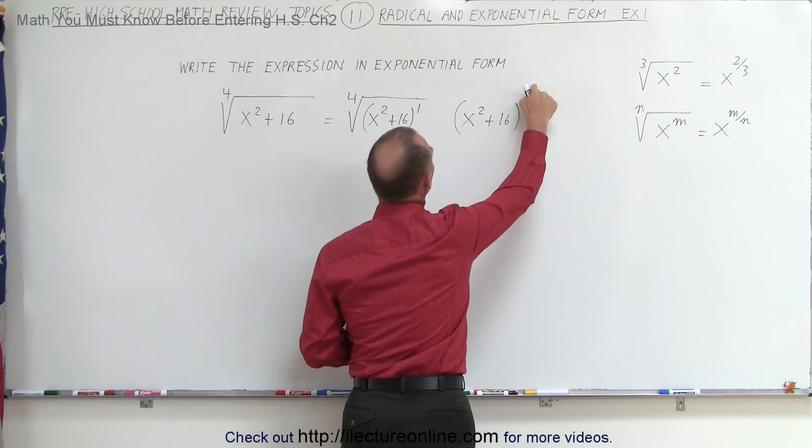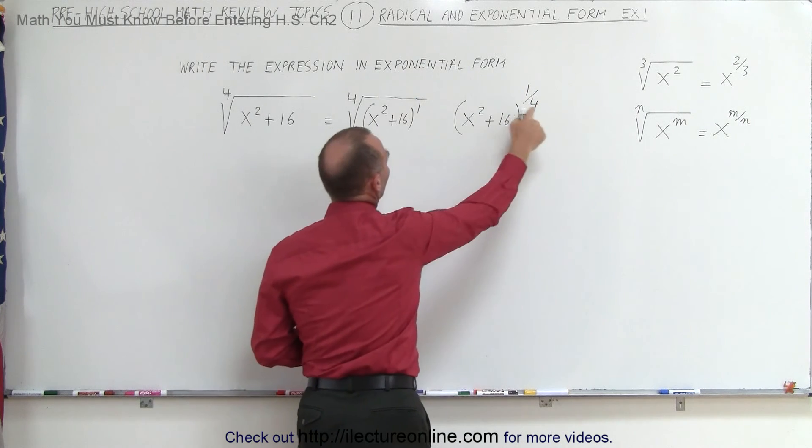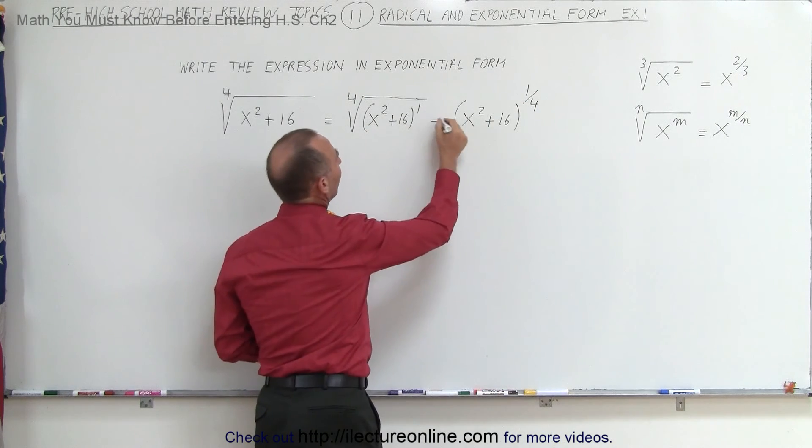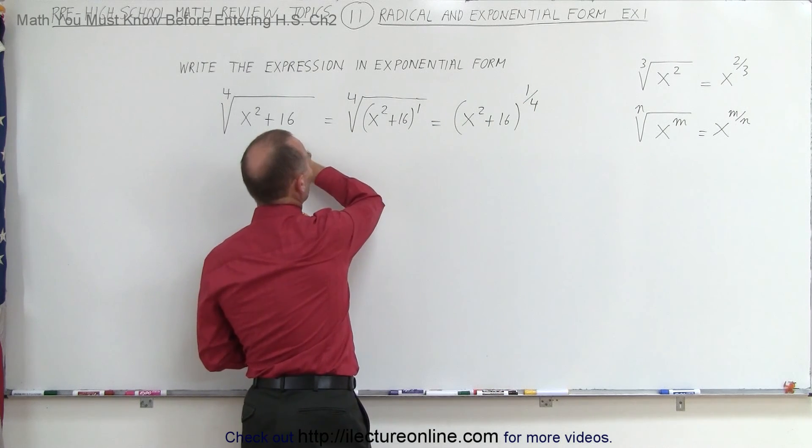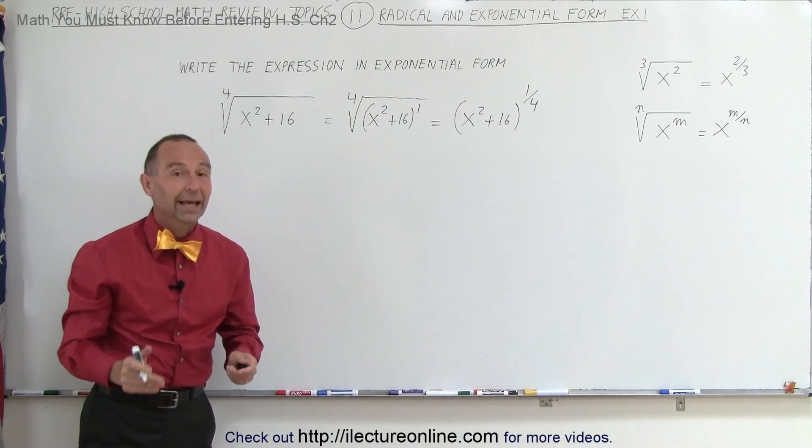Remember, the number in the numerator is the power, and the number in the denominator is the root. So it's the fourth root of this quantity to the first power. And that's how you write this, which is in radical form, into this format, which is the exponential form. And that's how it's done.